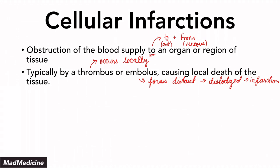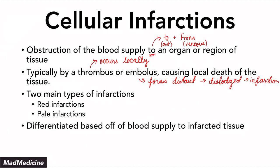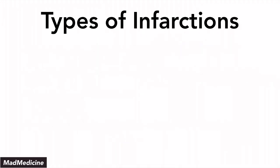Now there are two main types of infarctions: you have red infarctions and you have pale infarctions. These are differentiated based off of the blood supply that comes to the infarcted tissue, or where the blood supply is blocked. So with that being said, let's dive in and discuss the types of infarctions so you have a better understanding.